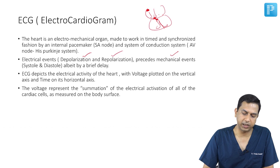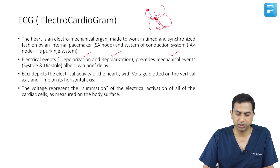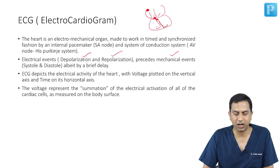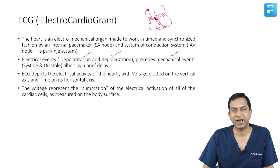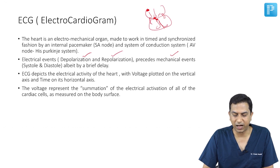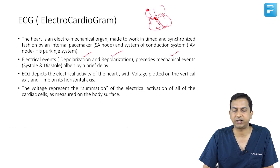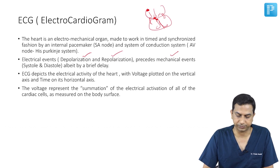Apart from this natural electrical communication pathway, there are at times accessory pathways that may act as a bypass track for conduction of electrical activity to and from the atria and ventricle.